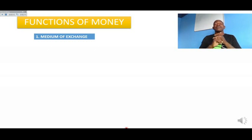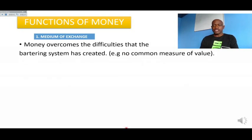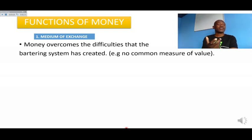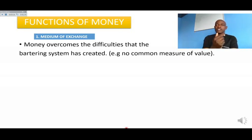Money serves as the medium of exchange. What does that mean? It means that money overcomes the difficulties that the barter system created. There was no common measure of value — it was just a matter of agreeing, like if you want this, let me give you this, but in terms of measurement of value, it was not even fair in most cases.